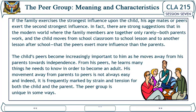The Peer Group: Meaning and Characteristics. If the family exercises the strongest influence upon the child, its age-mates or peers exert the second strongest influence. In fact, there are strong suggestions that in the modern world, where family members are together only rarely, both parents work, and the child moves from school classroom to lesson to another lesson after school, that peers exert more influence than the parents.